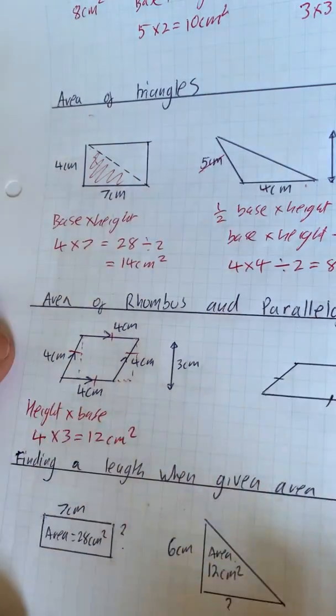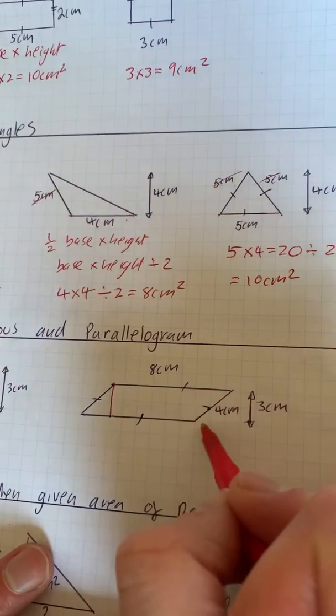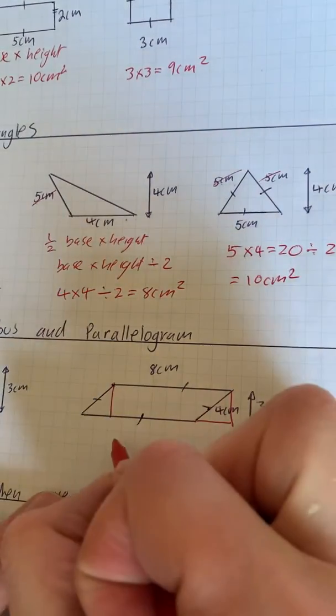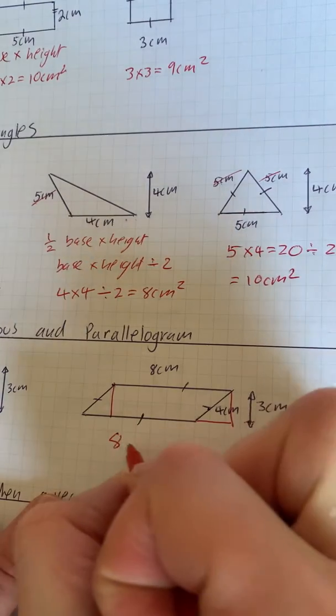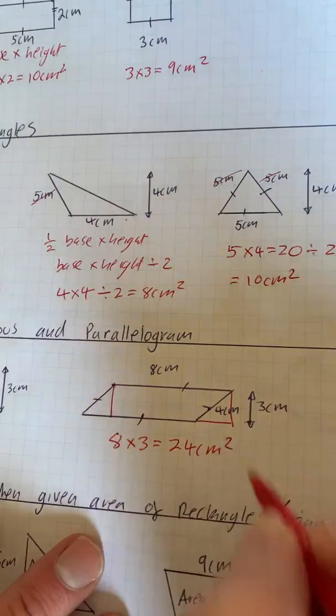Same principle: we cut that bit off there and if we put it on here, we've then got a rectangle. So it's the base times the height. So we've got 8 times 3, which is 24 centimeters squared.